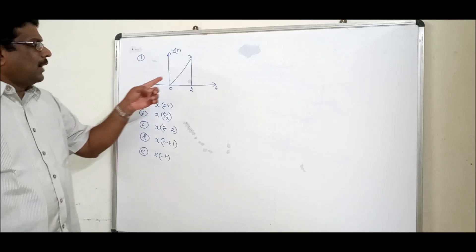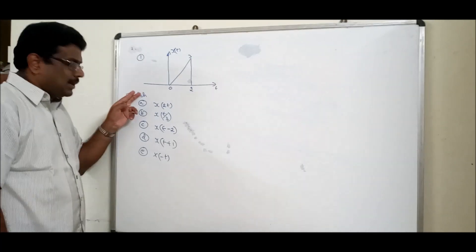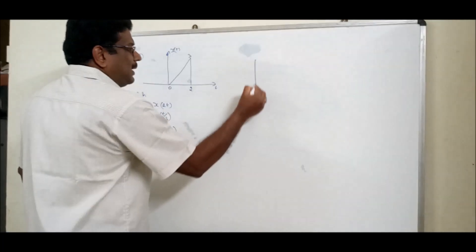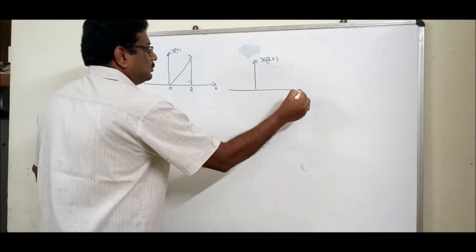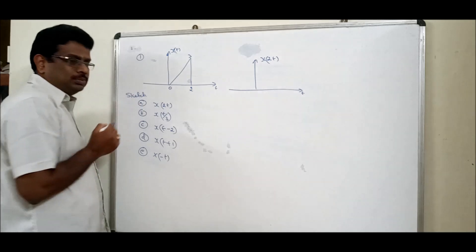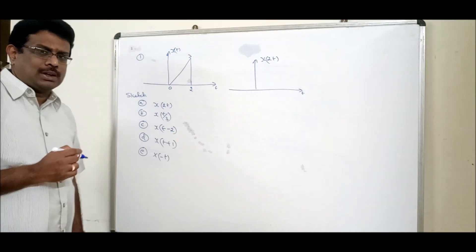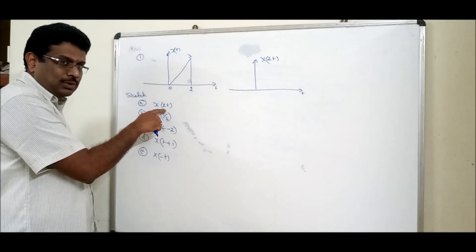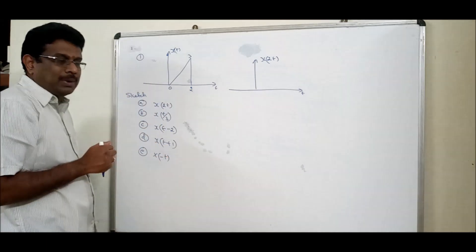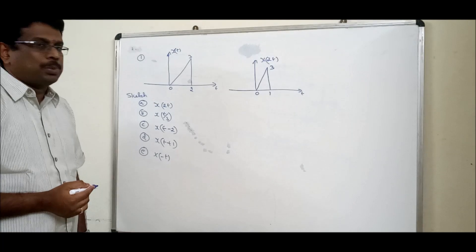Let us do some problems based on time operations — shifting, scaling, and reflection. I have given a signal with amplitude 3, which is a sawtooth from 0 to 2. Sketch x(2t). This comes under time scaling with A = 2, which is greater than 1, so it is compression. Compression by twice means the existing duration is halved, so the result is from 0 to 1 with amplitude 3. This is x(2t).